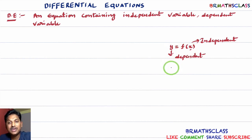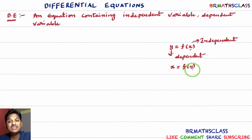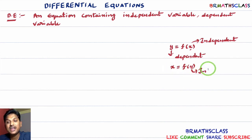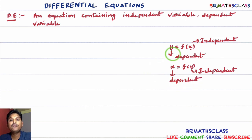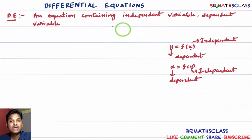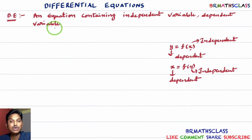Similarly, if we consider a function of the form x equal to f of y, in this case y is independent and x is dependent. So if y equal to f of x, x is the independent variable and y is the dependent variable. Now we understand what is an independent variable and what is a dependent variable.